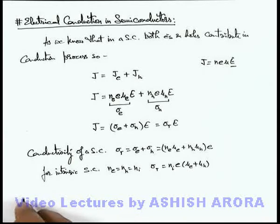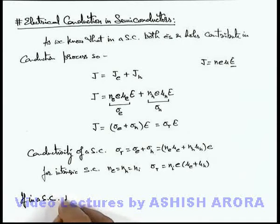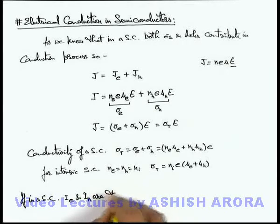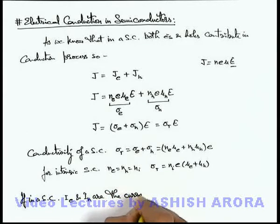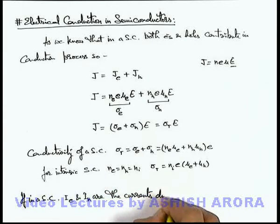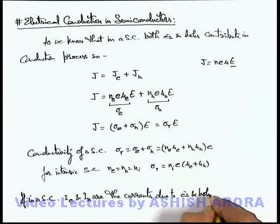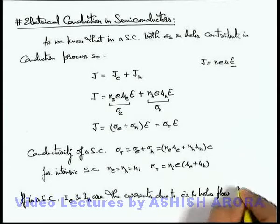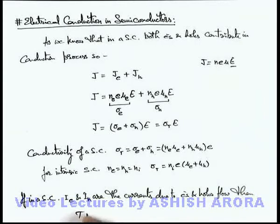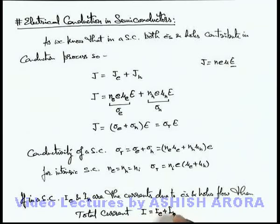And we can additionally write that if in a semiconductor I_e and I_h are the currents due to electrons and holes flow, then total current can be directly given as, in the semiconductor total current will be given by I_e plus I_h. This we can use.